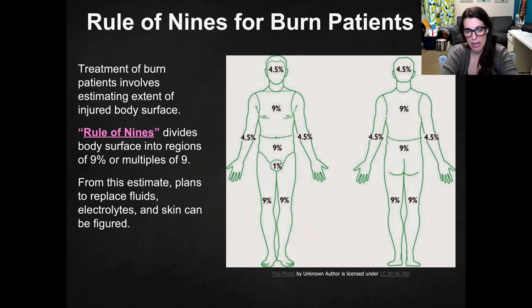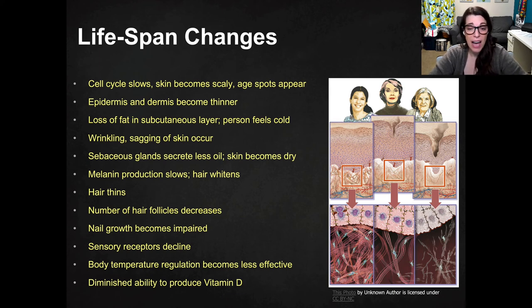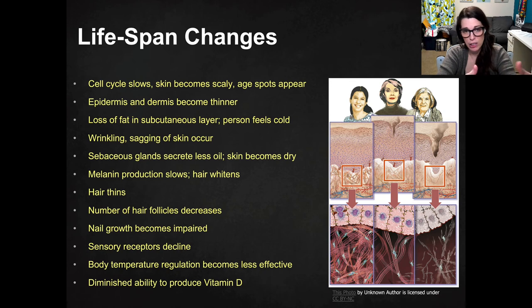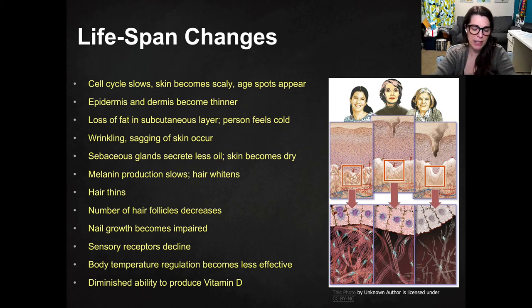Now we're moving to lifespan changes — how skin changes as you age. As you get older, your skin does not respond the same way anymore, and returning to its normal homeostatic state becomes more difficult and eventually impossible. The cell cycle slows down, skin becomes scaly, and age spots may appear. The epidermis and dermis become thinner, and the skin sags because fat is lost from the subcutaneous layer. People start feeling cold faster, and reduced protein production leads to wrinkling and sagging.